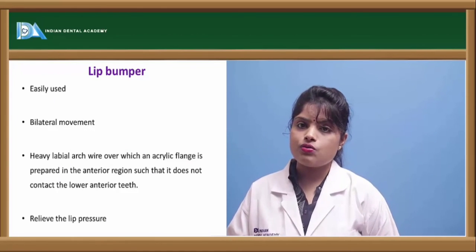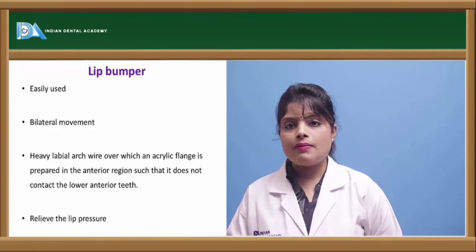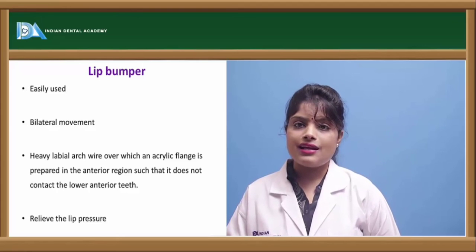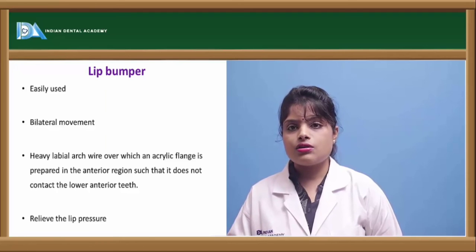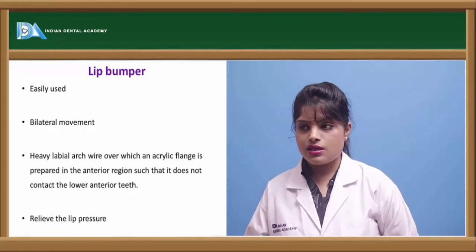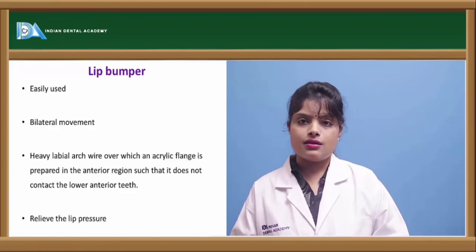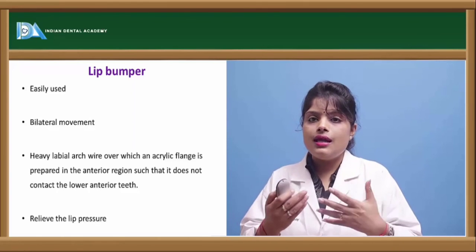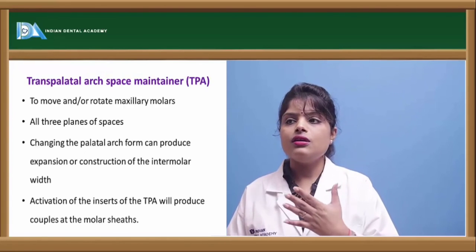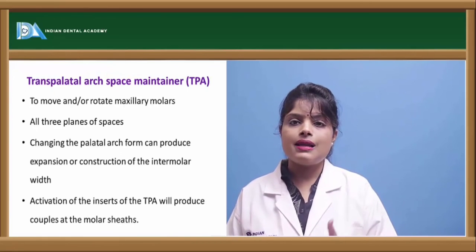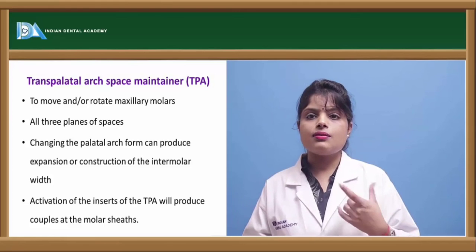The lip bumper is another type of space regainer used in the mandibular region. It is fabricated with an acrylic flange in the mandibular retainer, which prevents the lip from pushing back the teeth and relieves lip pressure. Another type is the trans palatal arch space regainer, which is generally used in the maxillary arch.